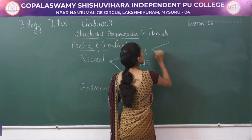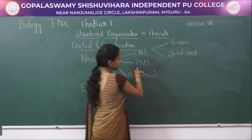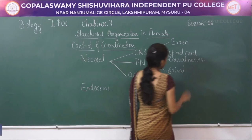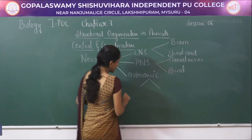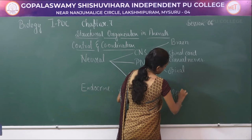The central nervous system includes two components: the brain and the spinal cord. The peripheral nervous system includes cranial nerves and spinal nerves. The autonomic nervous system includes two different types — sympathetic and parasympathetic.